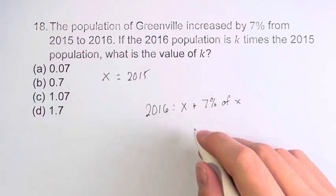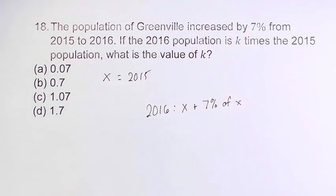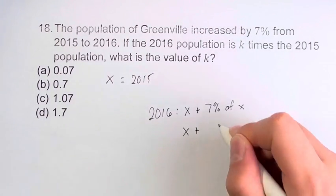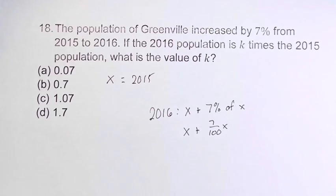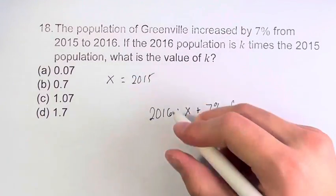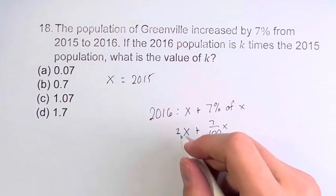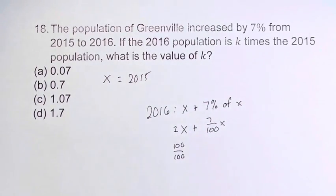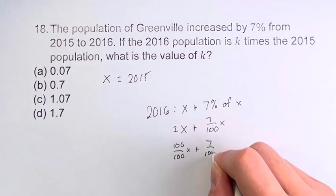Now we have to convert this into an expression that will actually determine the value of k. So, what does 7% mean? Well, percent is a number out of 100. So, this is x plus 7 out of 100 times x. This is just 1x — if you don't have a coefficient, that just means there's a 1. And 1 is equal to 100 divided by 100.